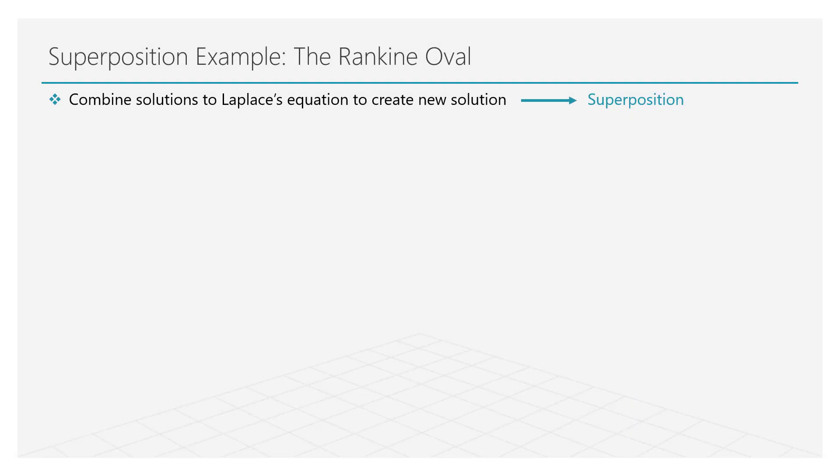Let us now shift gears and create a new flow based on the principle of superposition using the uniform, source and the sink flows that we just looked at. As we discussed in the previous lesson, the Laplace equation is a linear equation, which means we can combine multiple solutions of the Laplace equation to create a new solution. This is the principle of superposition. We have already derived that the stream function is the solution of the Laplace equation.